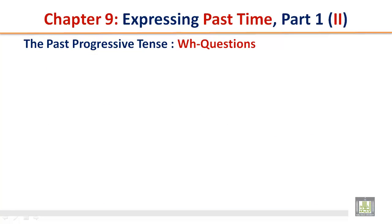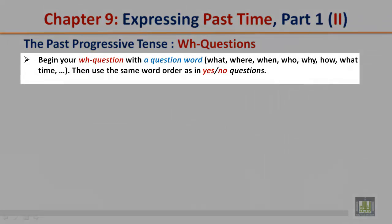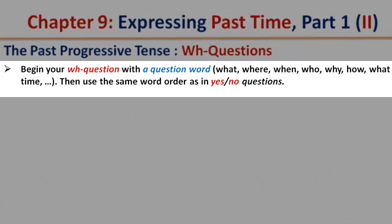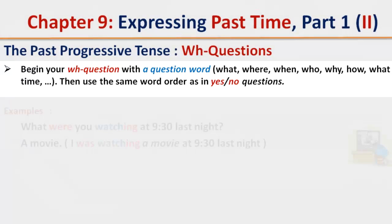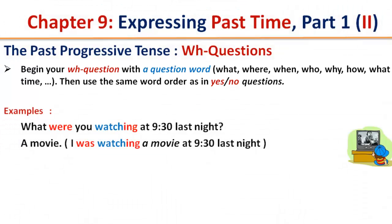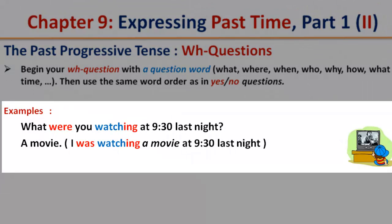The Past Progressive Tense — WH Questions. Begin your WH question with a question word: what, where, when, who, why, how, or what time. Then use the same word order as in yes or no questions. What were you watching at 9:30 last night? A movie. I was watching a movie at 9:30 last night.